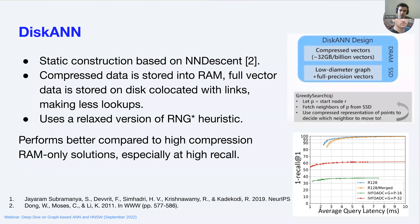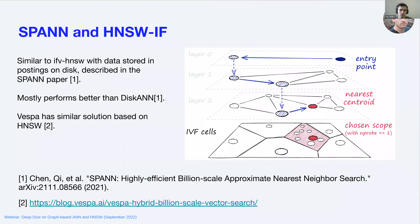There's an alternative solution for storing elements on disk — the SPANN paper — which is pretty similar to IVF-HNSW in memory but instead of product quantization, you store elements on disk. You have the same IVF structure but with a fast coarse quantizer. According to the SPANN paper it generally performs better than DiskANN. It's also worth mentioning that Vespa has a similar solution based on HNSW.